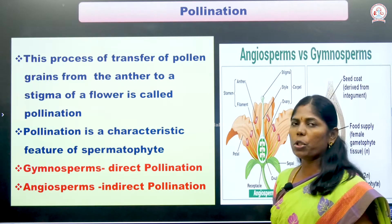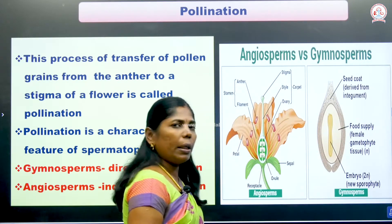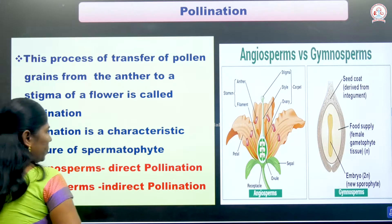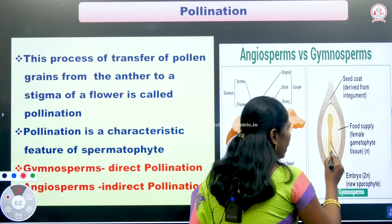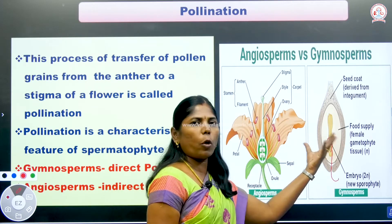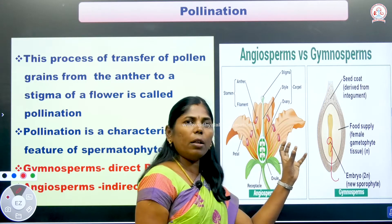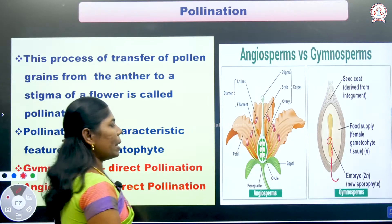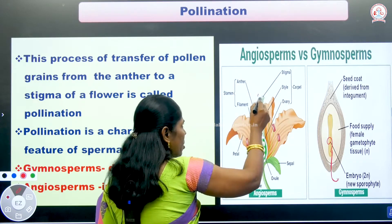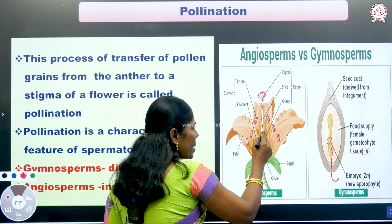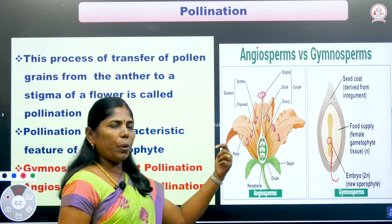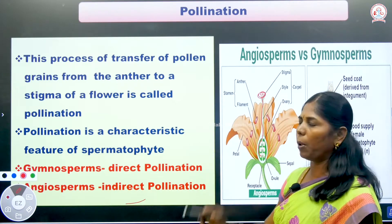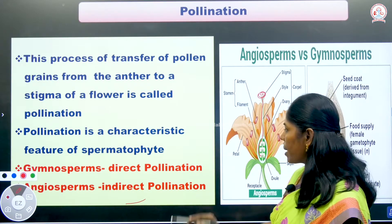In gymnosperms, there is direct pollination — pollen enters directly into the micropyle because the ovules are naked. In angiosperms, pollination is indirect: pollen grains are shed on the stigma, germinate to form a pollen tube, which slowly enters the ovule through the micropyle into the embryo sac. Gymnosperms have direct pollination; angiosperms have indirect pollination.